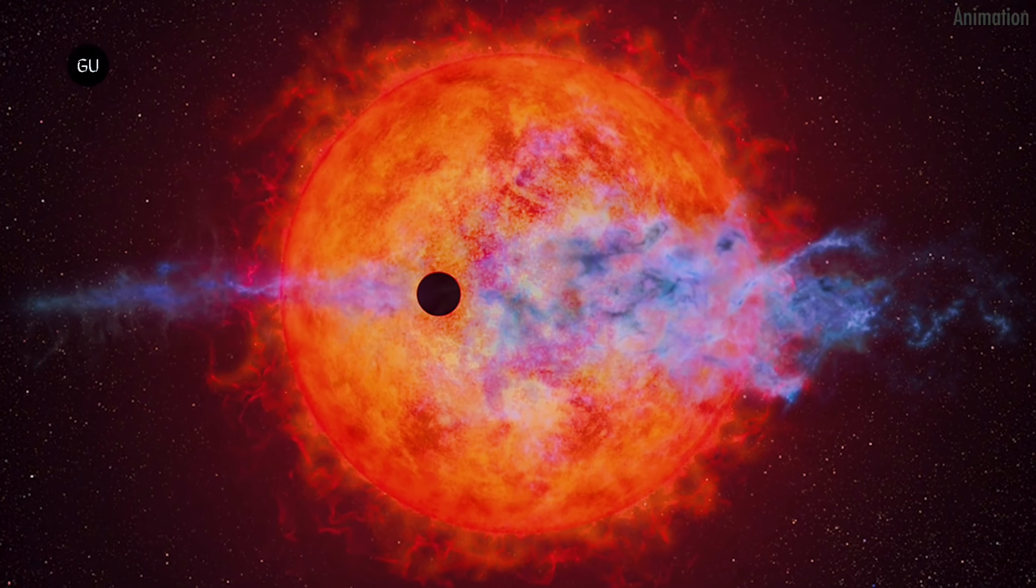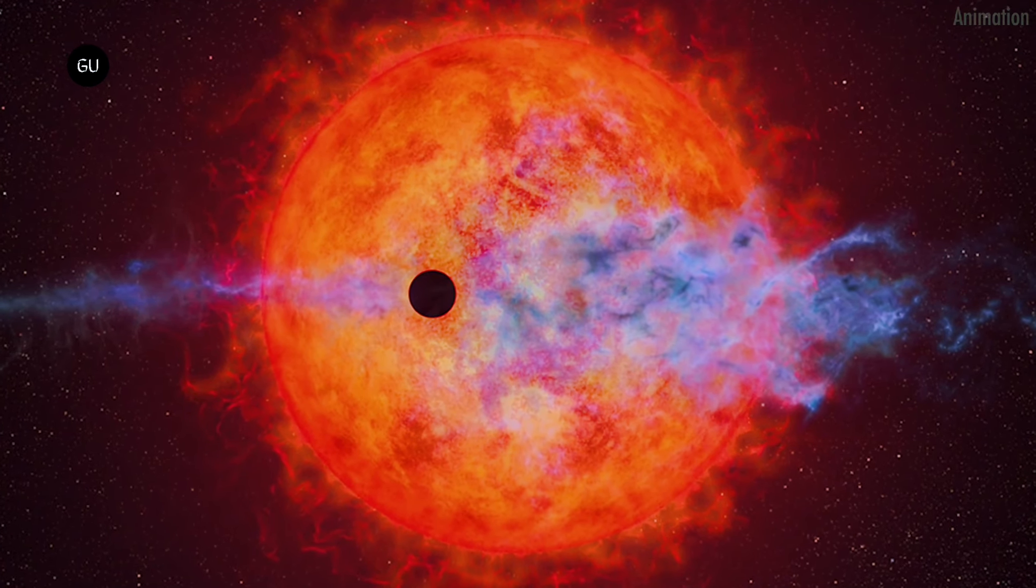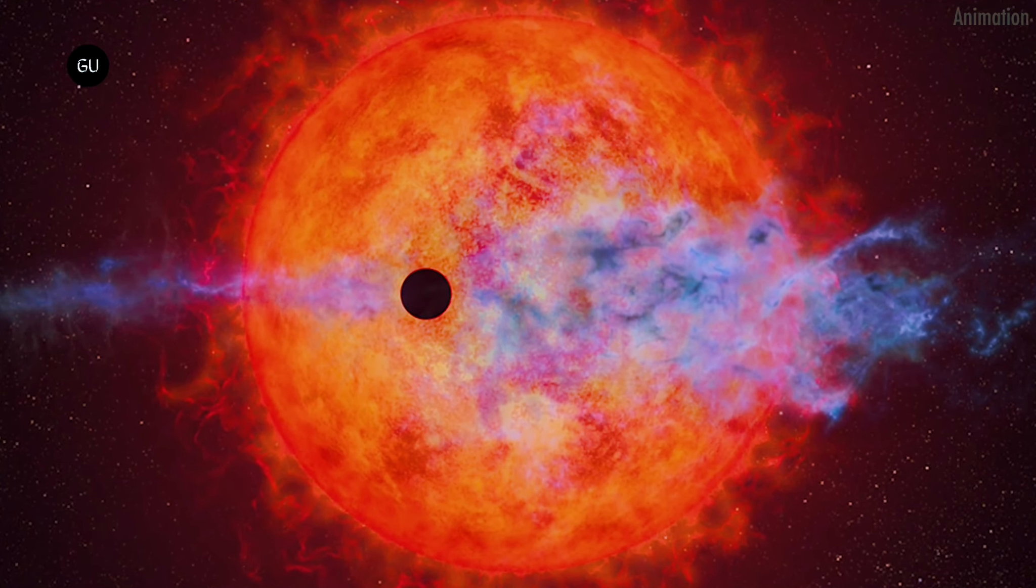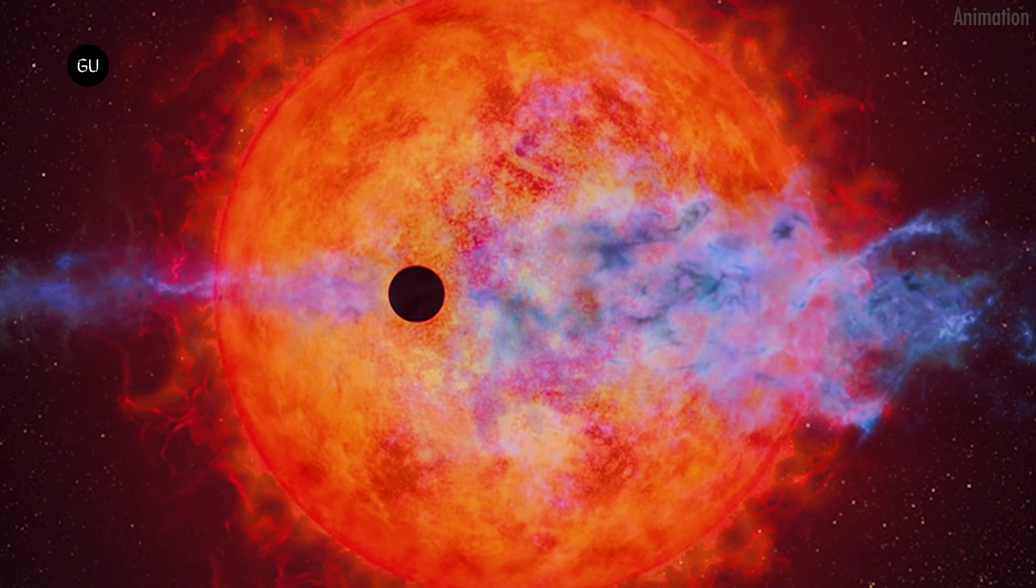In a surprising discovery, astronomers have observed a young planet evaporating its layers as it orbits a red dwarf star, exhibiting unpredictable changes in its atmosphere.